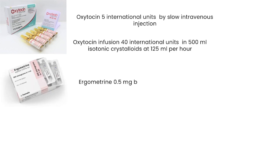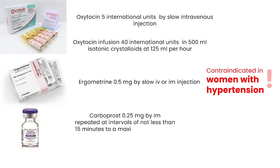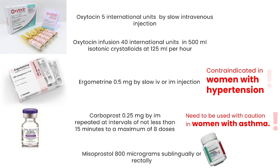Ergometrine 0.5 mg by slow intravenous or intramuscular injection is given if bleeding is not controlled, but it is contraindicated in women with hypertension. Carboprost 0.25 mg by intramuscular injection, repeated at intervals of not less than 15 minutes to a maximum of 8 doses, should be given if bleeding cannot be controlled with previous medications, but must be used with caution in women with asthma. Misoprostol 800 mcg sublingually or rectally is given if bleeding continues.